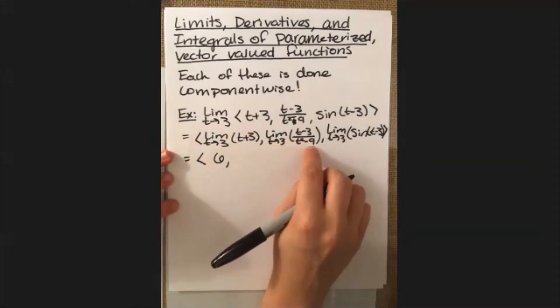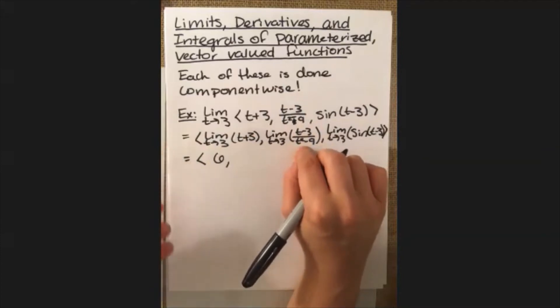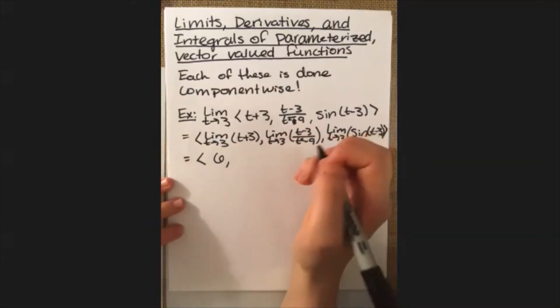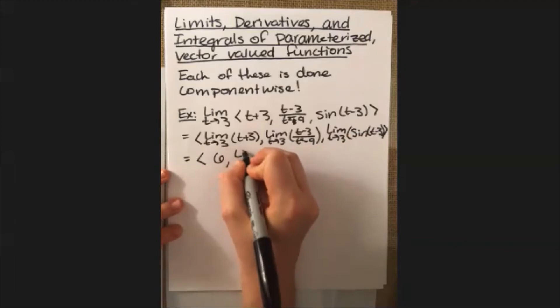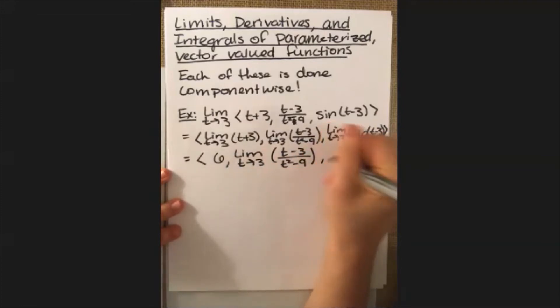This one is a little bit trickier though because if we plug 3 into the top and into the bottom, you get 0 over 0. So I'm just going to write that one down and we'll come back to it in just a second. And then this one, once again, we're able to do direct substitution. We plug 3 in for the t there, we get sine of 0, so that just winds up being equal to 0.